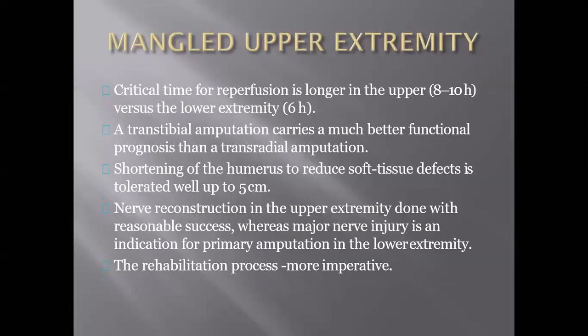Management of mangled upper extremity is different from lower extremity because we usually try to salvage as much as possible in the upper extremity. The prosthetics available for amputated lower limb are good, but for upper extremity the prosthetics are not good. The critical time for reperfusion is longer in upper extremities compared to lower extremities. In lower extremity, complete transaction of the nerve is an indication for amputation, but not in the case of upper extremities.